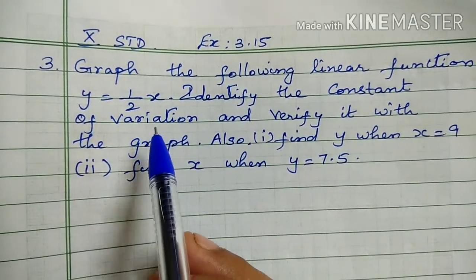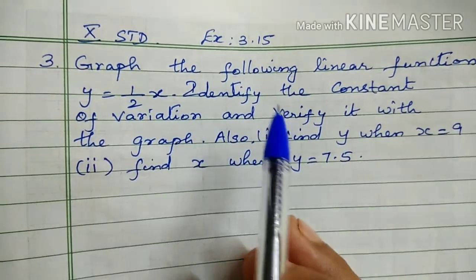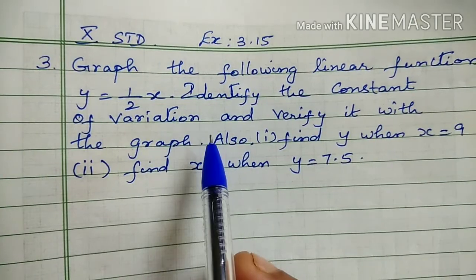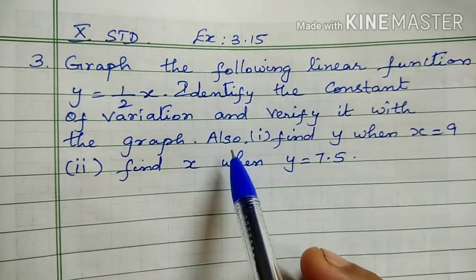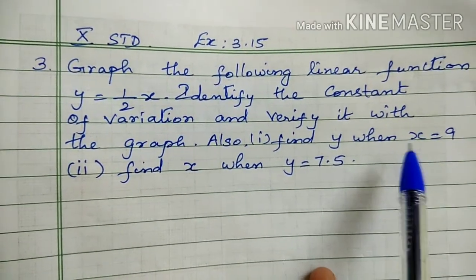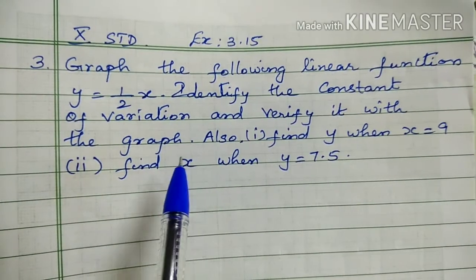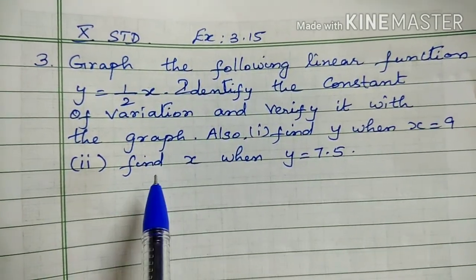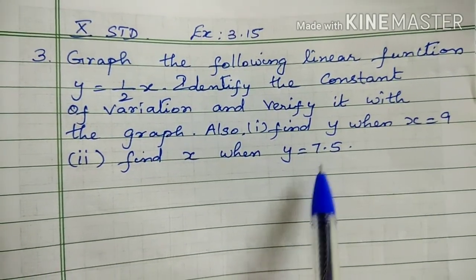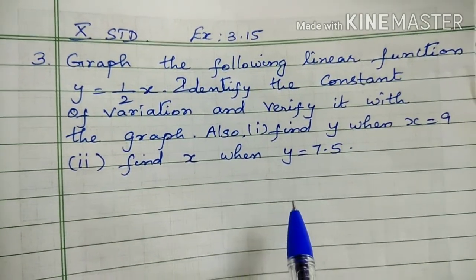Identify the constant of variation. The constant is k, and 1 by 2 is k. Verify it with the graph.